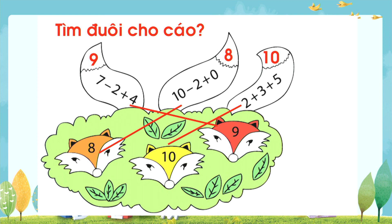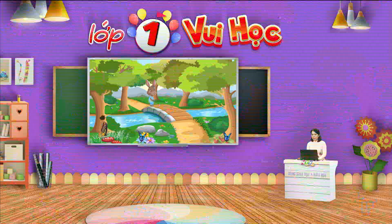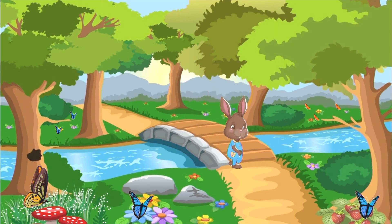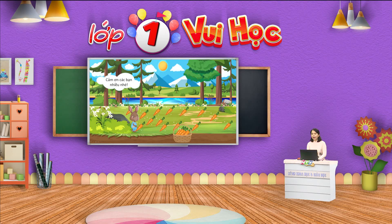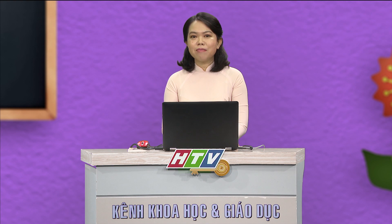Xin chúc mừng các em đã có câu trả lời đúng. Sau khi tìm đuôi cho cáo, cáo đã tránh đường cho bạn thỏ đi tiếp. Bạn thỏ đã băng qua cầu và đến một khu vườn có rất nhiều cà rốt. Thế là bạn đã nhổ thật nhiều cà rốt để mang về cho cả nhà. Bạn thỏ cảm ơn các em — nhờ có sự giúp đỡ của các em mà bạn thỏ đã tìm được thức ăn cho cả nhà. Chúng ta chào tạm biệt bạn thỏ nào. Cô mong rằng các em sẽ luôn luôn biết quan tâm, giúp đỡ mọi người xung quanh mình nhé.